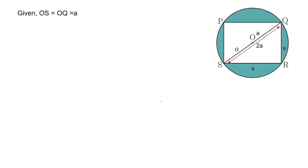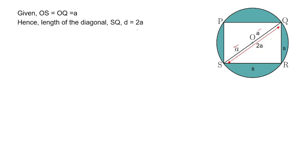Here, the radius OS is of length a, and OQ is also a radius of the circle, so it is also length a. Therefore, the length of the diagonal SQ is equal to 2a.